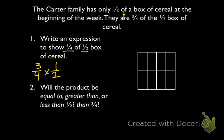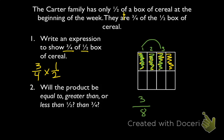First, let's shade in 1 half of all the boxes, because that's how much cereal they had to start with. Of these, they ate 3 quarters of it. If we look at our double-shaded boxes, we'll see that's 3 eighths — that's how much of the box of cereal they ate. Comparing this to 1 half, we'll see that 3 eighths is less than 1 half, since our shaded green is 1 eighth smaller than our original shaded yellow. So 3 eighths, our final product, is less than 1 half.